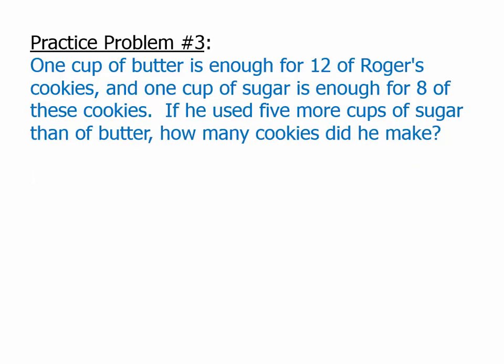This is a slightly harder problem. Pause the video, and then we'll talk about this. Okay. So, what we have here are a few different ratios. We have cup of butter for a number of cookies, cup of sugar for a number of cookies. And then what we're looking for is a difference. So, we're not looking for how many cups of butter or how many cups of sugar. We're given this odd piece of information, five more cups of sugar than of butter. So, this is a tricky one. This is actually going to require us to use both strategies.